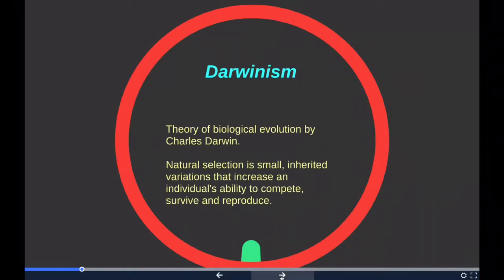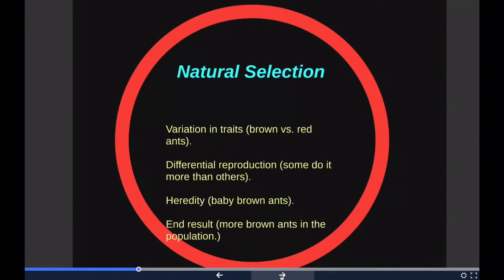In natural selection we look at four things: variation in traits and differential reproduction. In this example, we start with brown ants and red ants — that's the variation in traits, they look different because of their color. Differential reproduction means all individuals, or in this case ants, did not reproduce to their full capacity. Say that the red ants get eaten by birds more often than the brown ants.